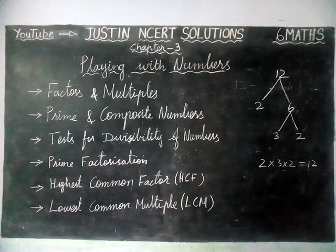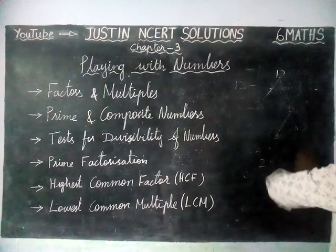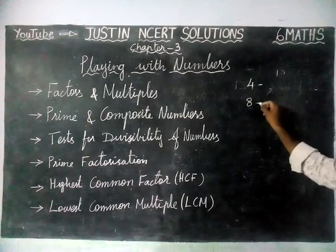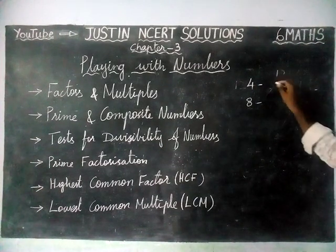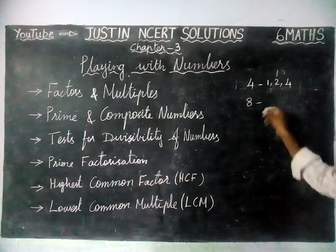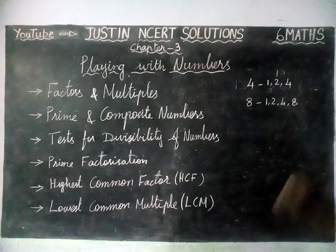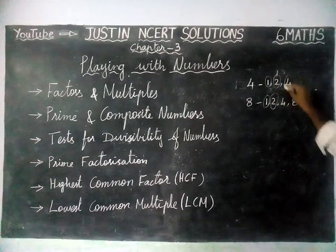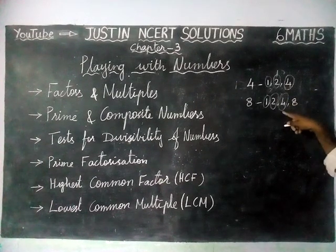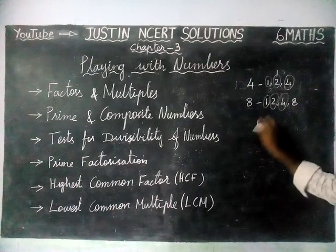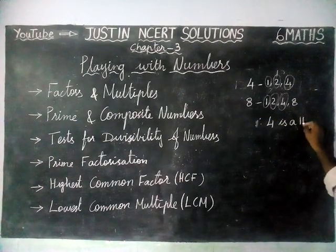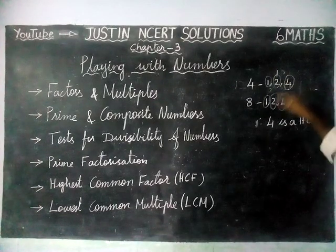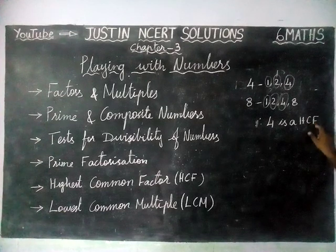And next one, highest common factor. We will find the common factors for 2 numbers. For example, taking 4 and 8 — the factors of 4 are 1, 2, 4. The factors of 8 are 1, 2, 4, 8. The common factors are 1, 2, and 4. Among these common factors, which is the highest? 4. Therefore, 4 is the HCF — highest common factor — of 4 and 8. HCF of 4 and 8 is equal to 4, because among the common factors, 4 is the highest value.